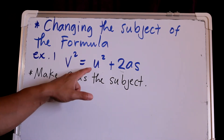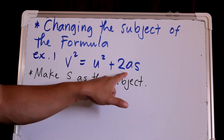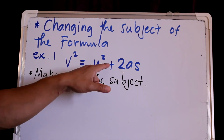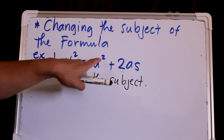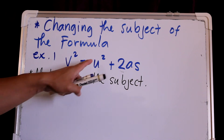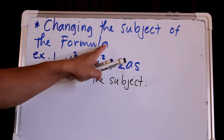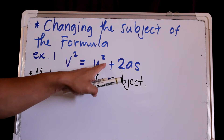And if it is divided here, that means you are going to multiply on both sides. And for example, if you have a square, the opposite of square is the square root, so we apply the square root and remove the square.